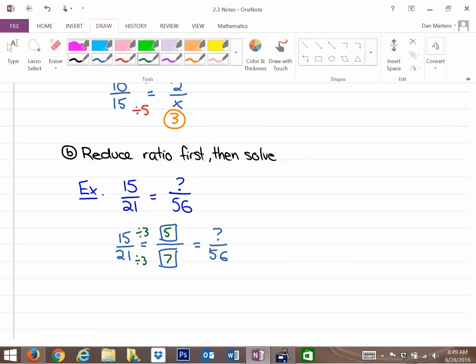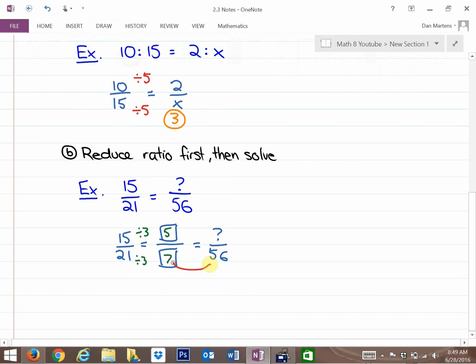And the reason that's useful is because if you look at the denominator now, seven does go into fifty-six. Seven goes into fifty-six eight times. So why that's useful? The numerator now is five times eight, which is going to be equivalent to forty.